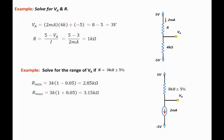So we can state that VA max is equal to 5 minus I times R min. That is 5 minus 2 milliamp times 2.85k. That is equal to negative 0.7 volts.